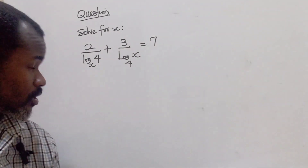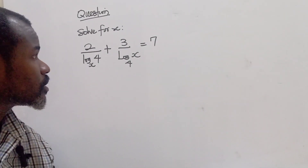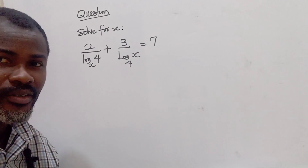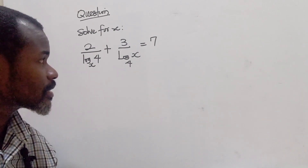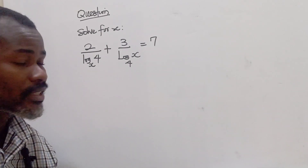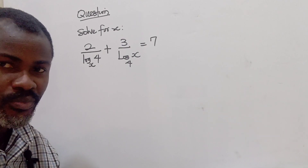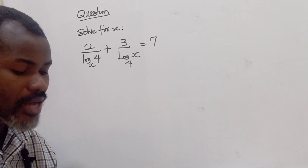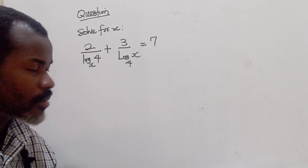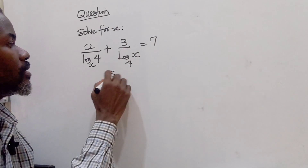The question says: solve for x. We have log 4 base x, plus 3, divided by log x base 4, equals 7.